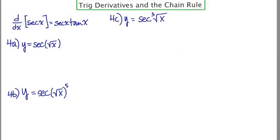The next few examples involve taking the derivative of secant. The derivative of secant x is secant x tan x.